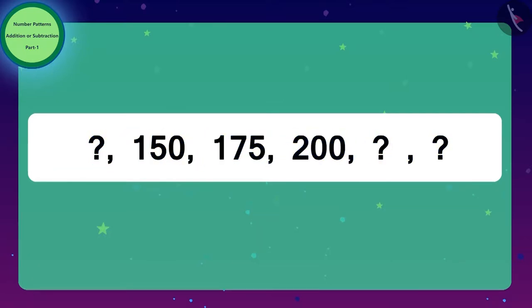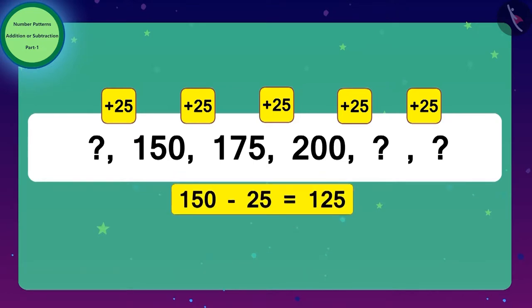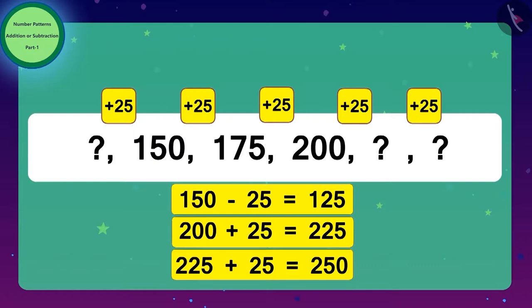Here, to get the next number, we will have to add 25 to the previous number. Similarly, to get the first number, 25 has to be subtracted from the second number. Once you understand the pattern, then you can easily write the next number to complete the pattern.